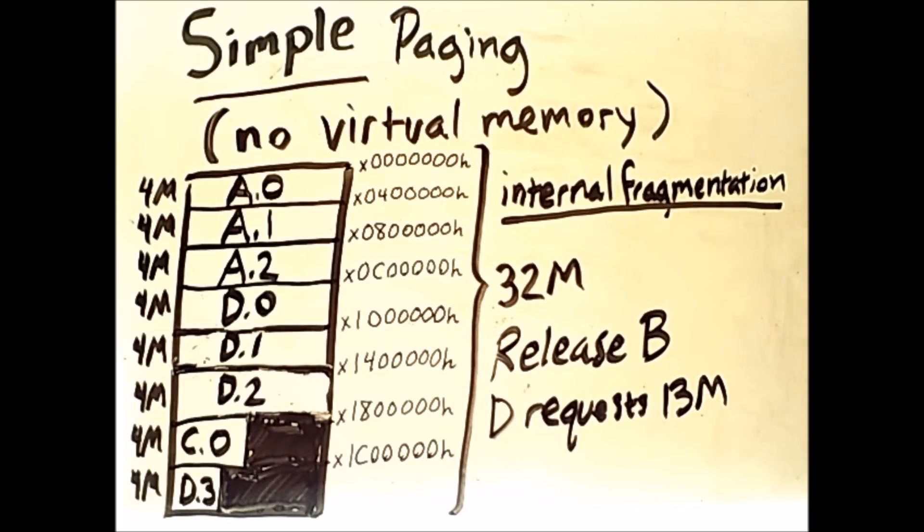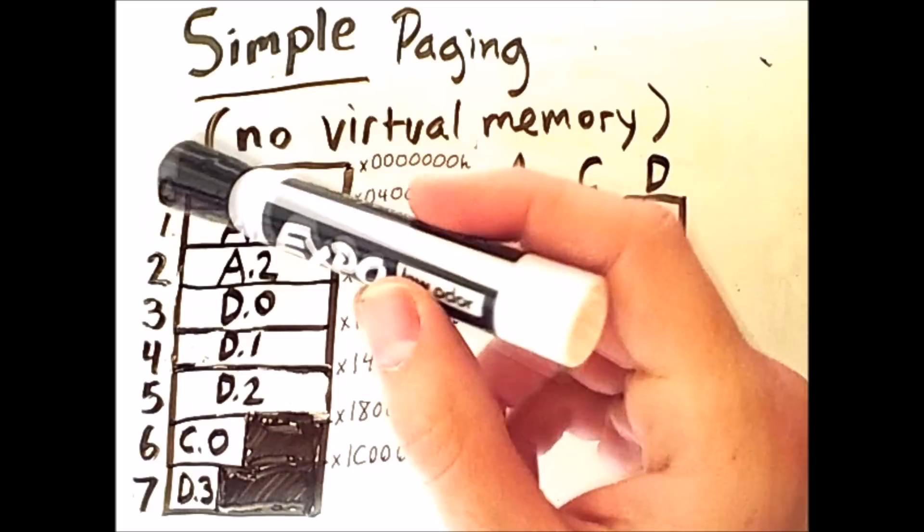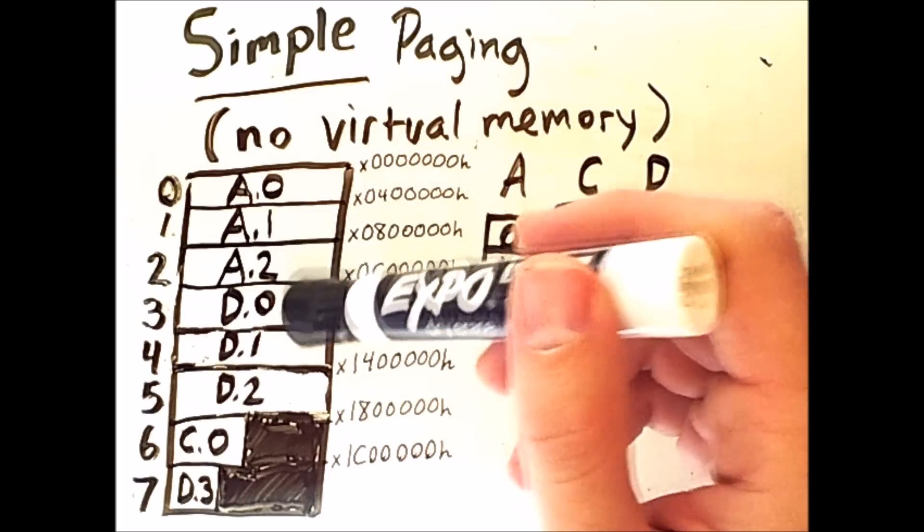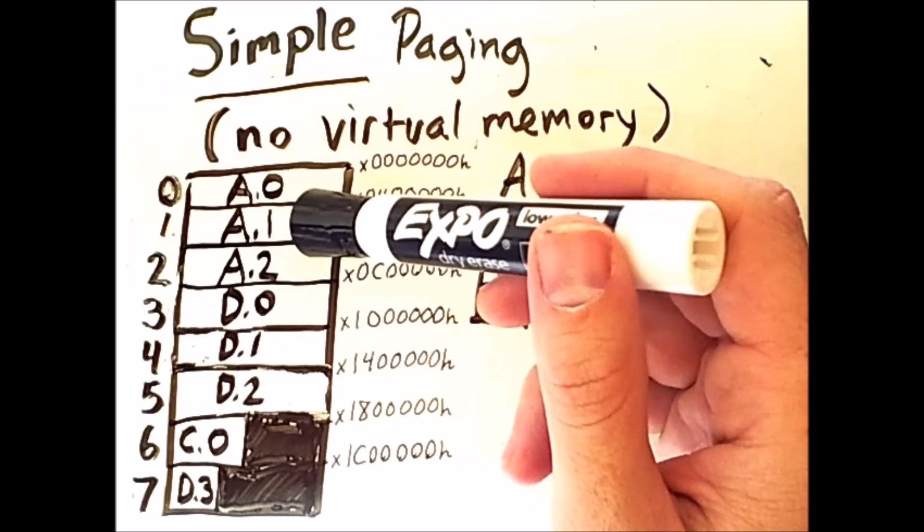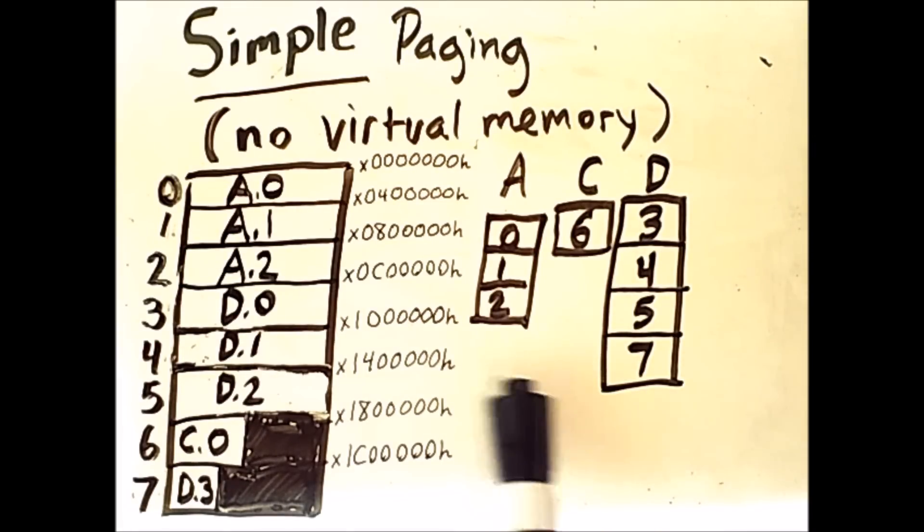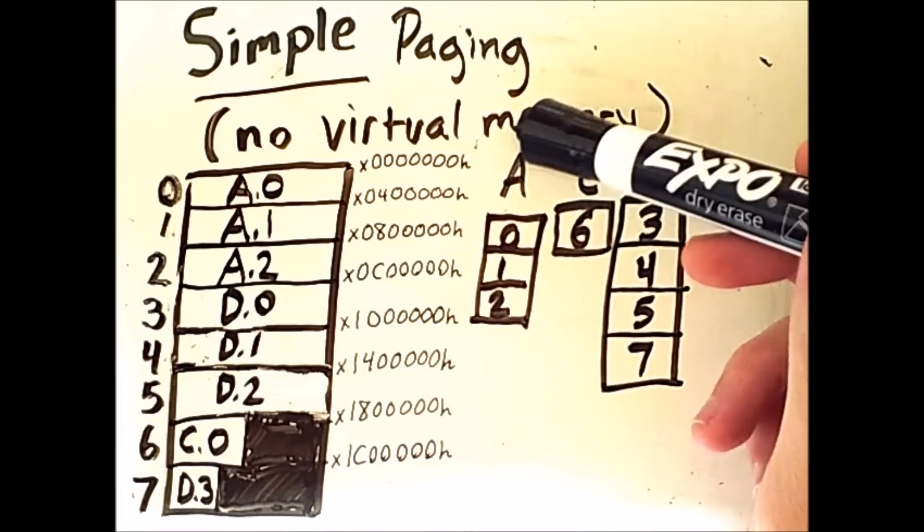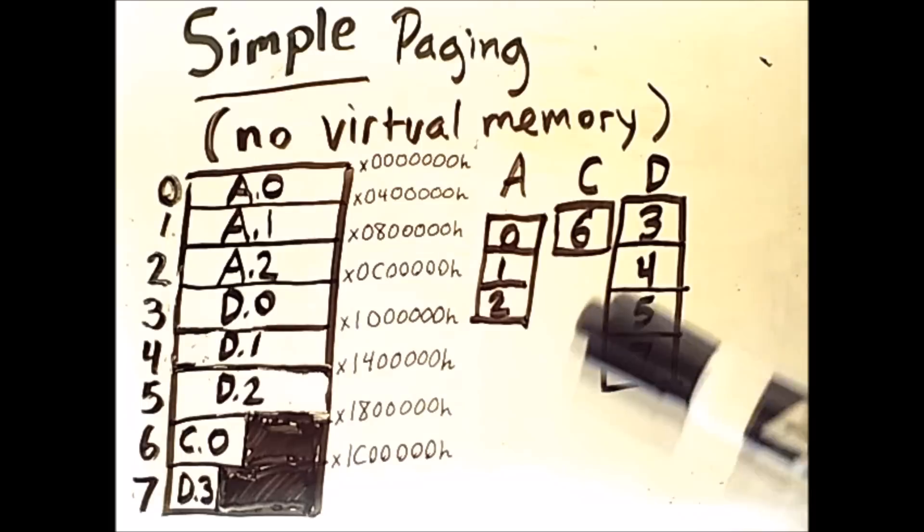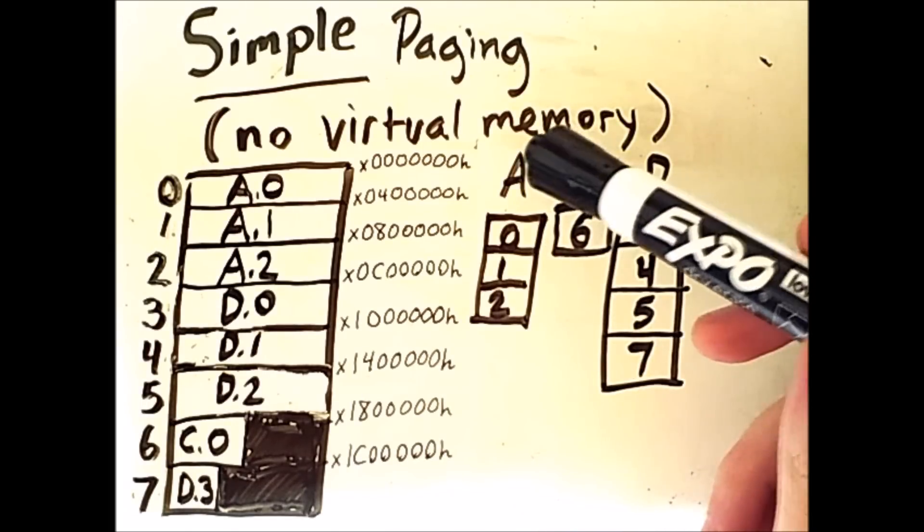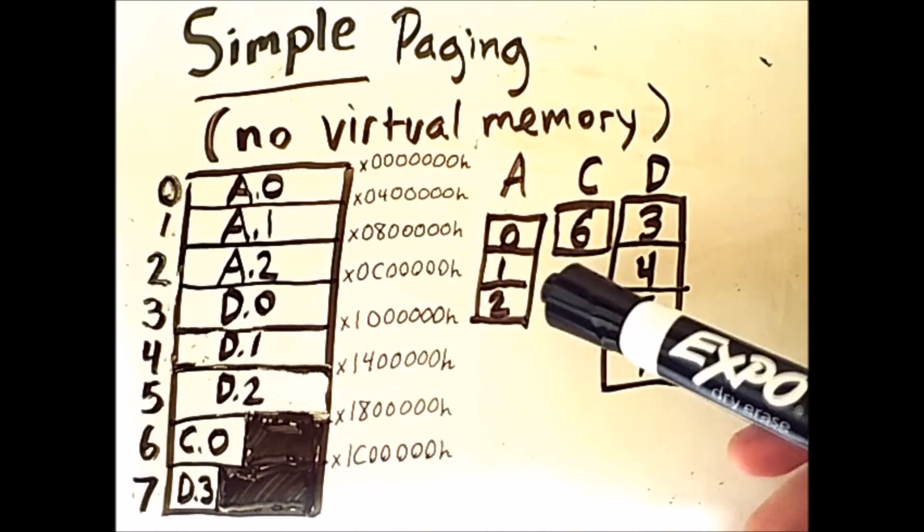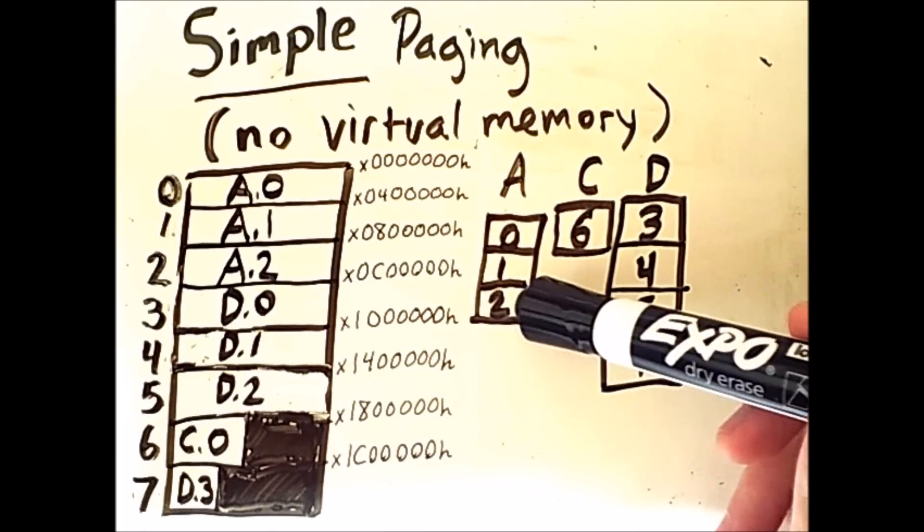So here is what a page table looks like for these processes. So notice that I have added labels on the left here. These numbers are labels for the frames in memory. So this first frame is frame 0, this is frame 1, and so on. There are 8 total frames numbered 0 to 7. Now, what I've drawn here are the page tables for each of these processes. Process A has this page table, and all a page table is is a list of where the frames containing the pages are located. So for process A, we have a fairly simple mapping. Page 0 of process A is stored in frame 0. Page 1 is stored in frame 1, and page 2 is stored in frame 2.